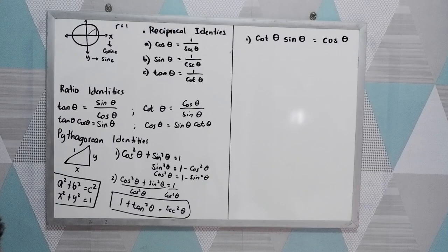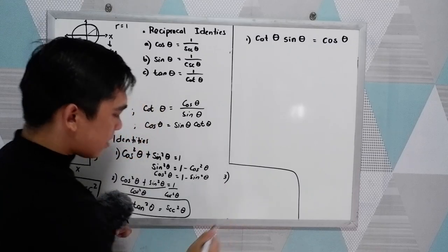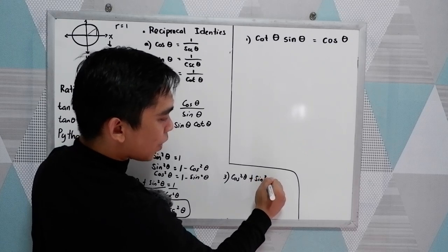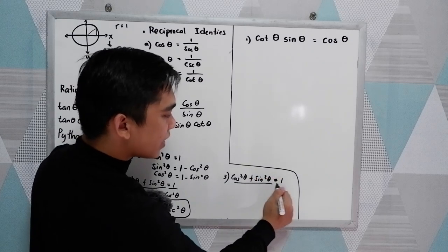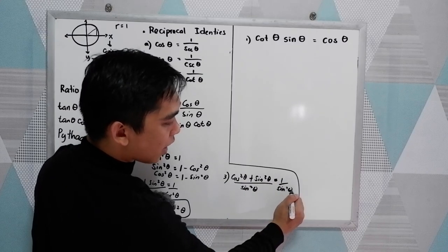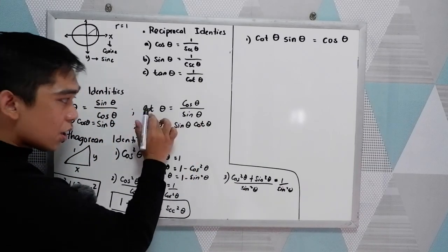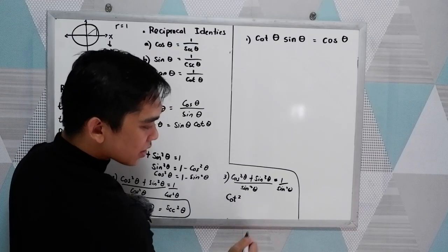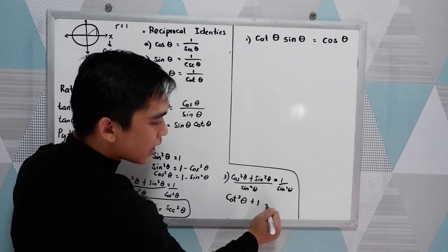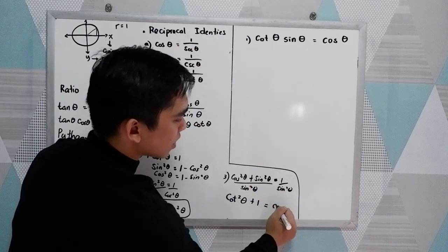We can also get our third identity. Dividing cosine² θ + sine² θ = 1 by sine² θ on both sides: cosine² θ / sine² θ + sine² θ / sine² θ = 1 / sine² θ. Since cosine over sine equals cotangent, and 1 over sine² is cosecant², we get: cot² θ + 1 = csc² θ.